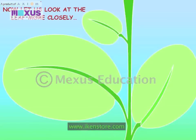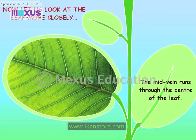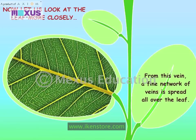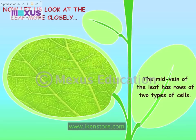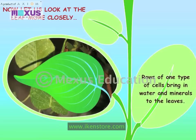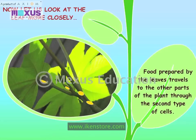Now, let us look at the leaf more closely. The mid-vein runs through the centre of the leaf. From this vein, a fine network of veins is spread all over the leaf. The mid-vein of the leaf has rows of two types of cells. Rows of one type of cells bring in water and minerals to the leaves. Food prepared by the leaves travels to other parts of the plant through the second type of cells.